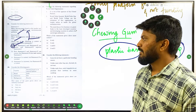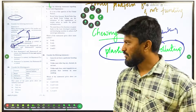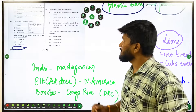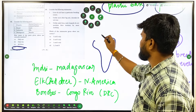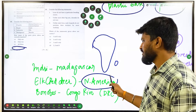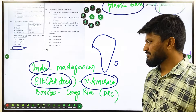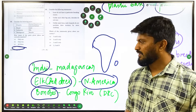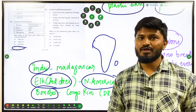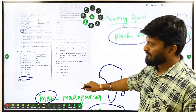Question 23 asks about animal-habitat pairs: indri in Brazil, elk in Indonesia, and bonobo in Madagascar. The answer is none of the above are correctly matched. Indri is found in Madagascar — an island off the African continent. Elk or red deer is native to North America. Bonobos are found in the Congo river region. Bonobos look similar to chimpanzees; indri belongs to the tarsier family found in Madagascar.